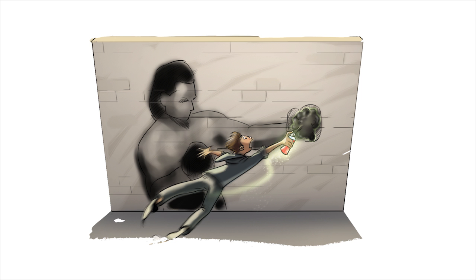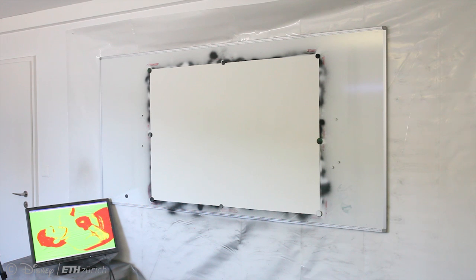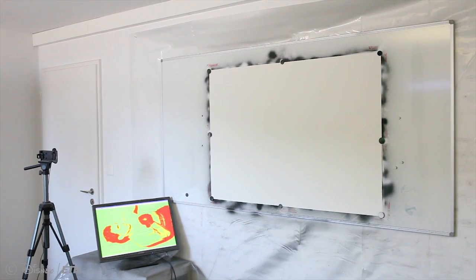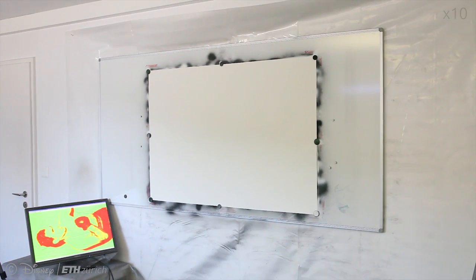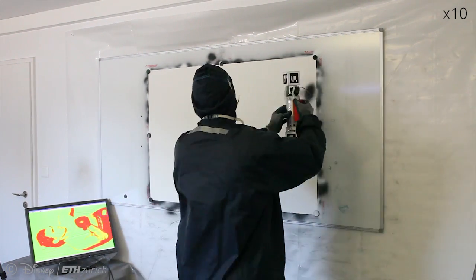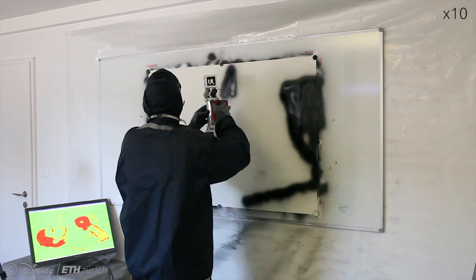As the user waves the spray can in front of the canvas, we track its position and determine the optimal amount of paint to disperse. Here we show a typical painting session with our system. We have broken this boxer image into two large sheets of paper. Two calibrated webcams on either side of the user track the position of the spray can relative to the canvas in real-time. Our optimization determines when to trigger the paint spray also in real-time.